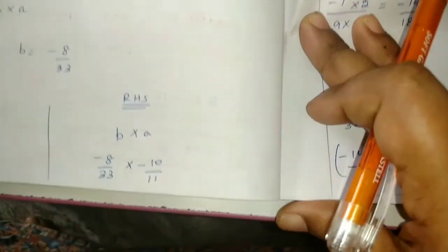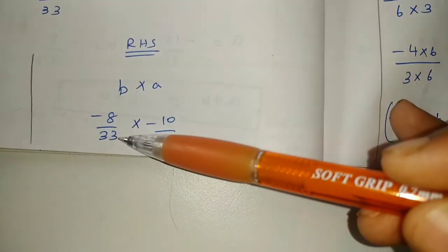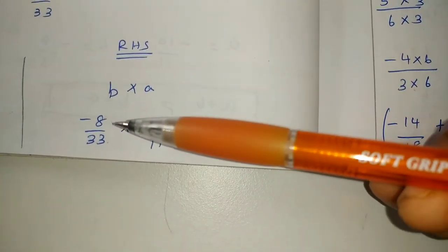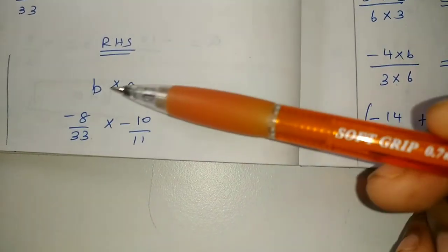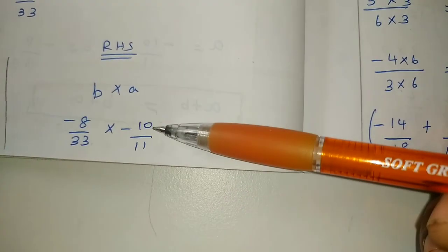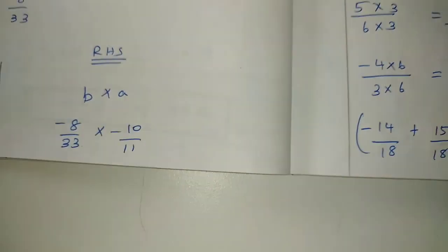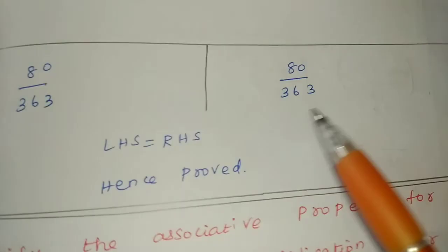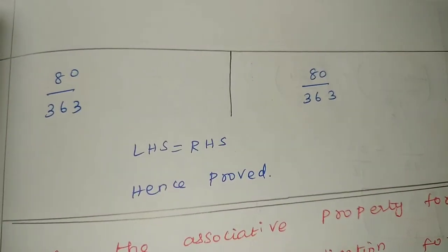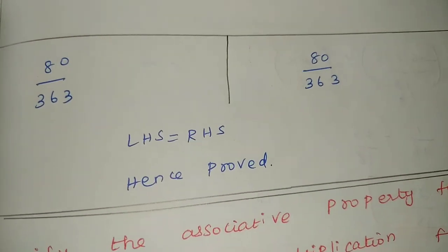For RHS, B into A: minus 8 by 33 into minus 10 by 11. Minus into minus gives plus. 8 into 10 is 80, 33 into 11 is 363. So RHS is also 80 by 363. LHS is equal to RHS, hence proved for multiplication under commutative property. Thank you.